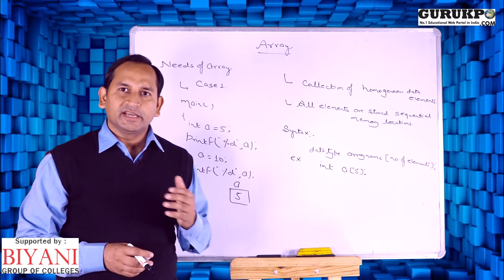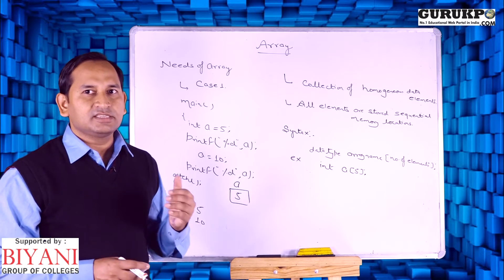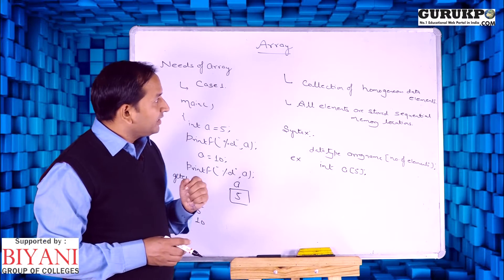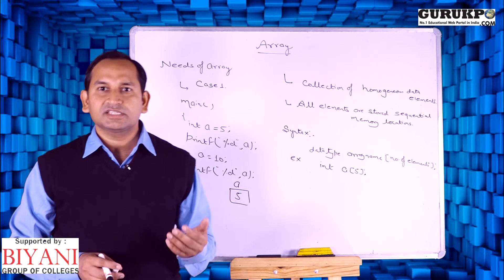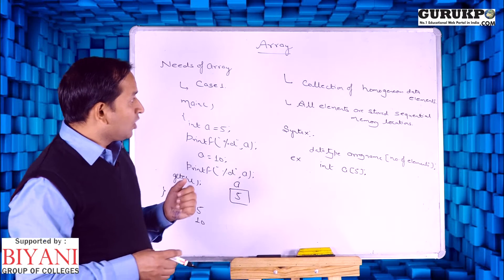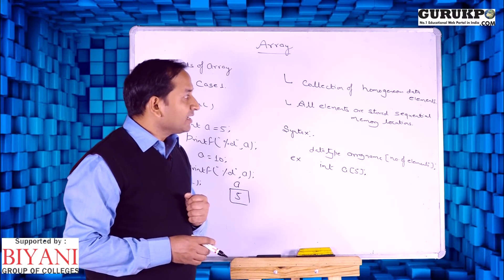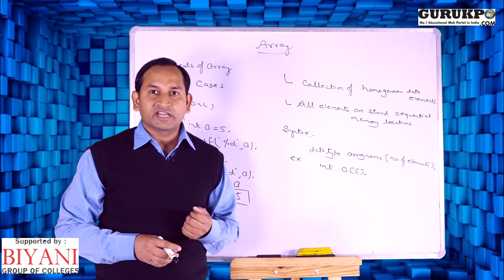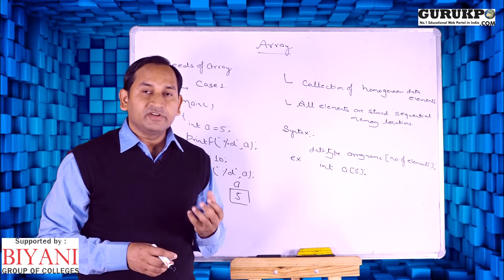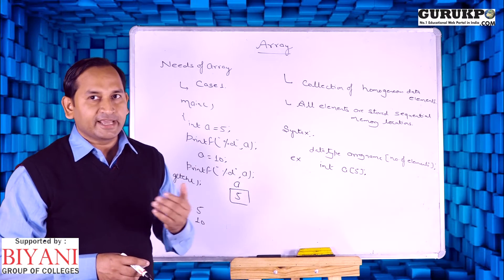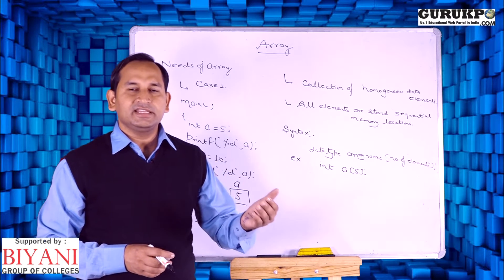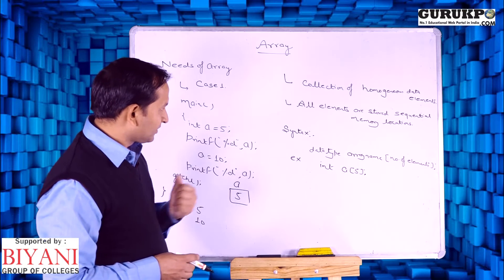This is a very important concept. Arrays are used in almost all programming languages — C, C++, Java, .NET. According to the definition, an array is a collection of homogeneous elements, meaning similar type of elements such as integer, float, or character. All elements are stored in sequential memory locations. This is the biggest advantage of an array — it is very useful for searching. If we know the base address of the first element, we can easily access any element.